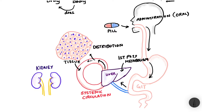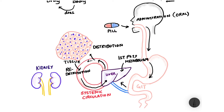The drug coming back from the tissue to the blood is known as redistribution. From the blood, the drug is then taken up by the liver to break it down — metabolism occurs again. The liver breaks the drug down into a water-soluble form, and from the liver the drug goes into the kidneys for excretion.